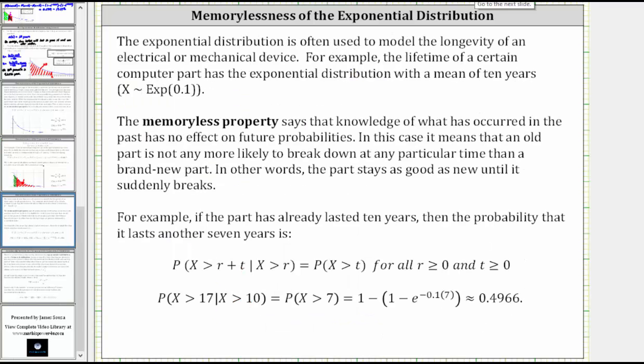The exponential distribution is often used to model the longevity of an electrical or mechanical device. For example, the lifetime of a certain computer part has the exponential distribution with a mean of 10 years. And because the mean is 10 years, the decay parameter m is reciprocal of 10, or one divided by 10, which is one-tenth or 0.1.